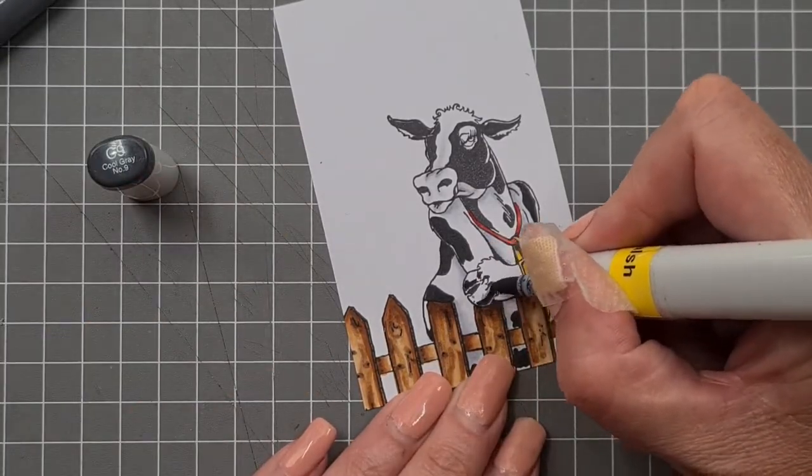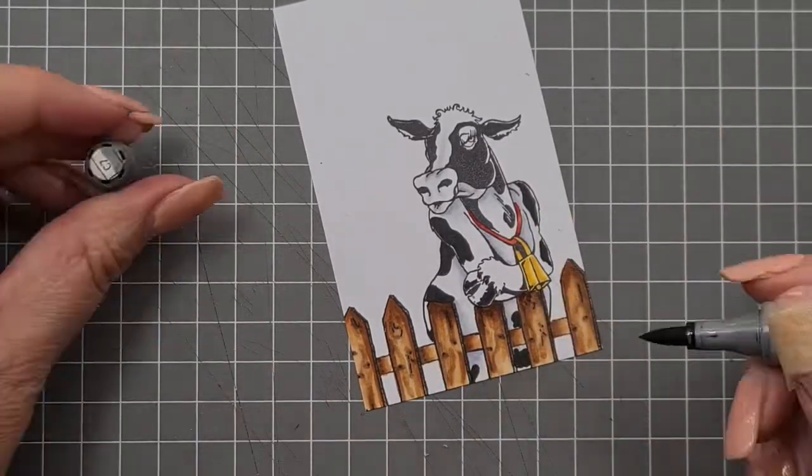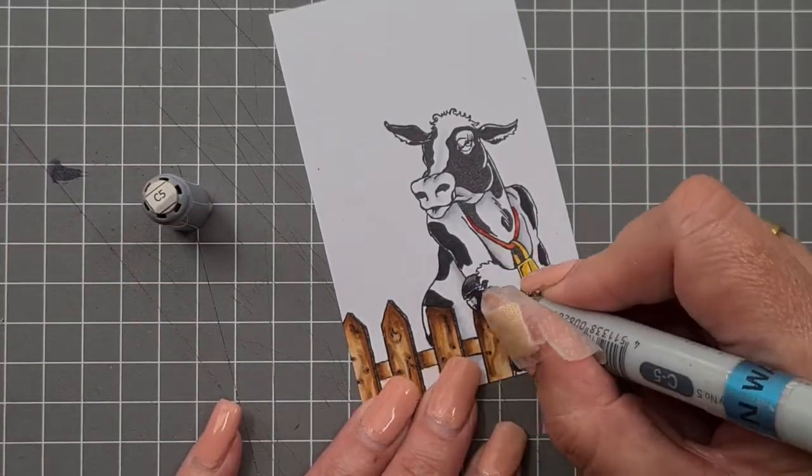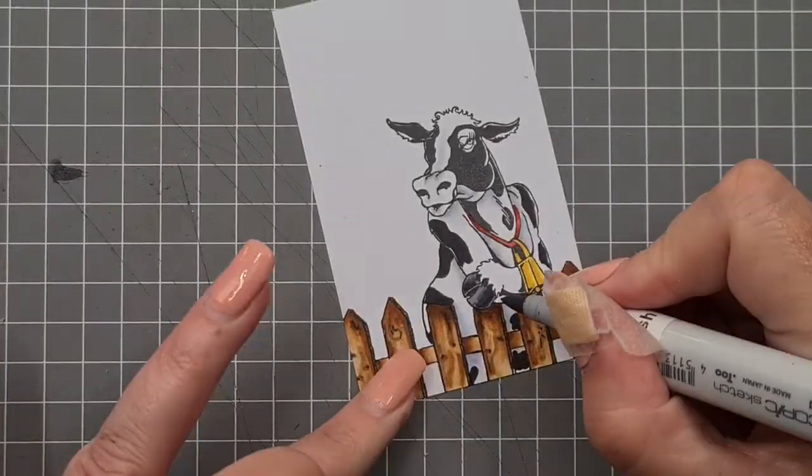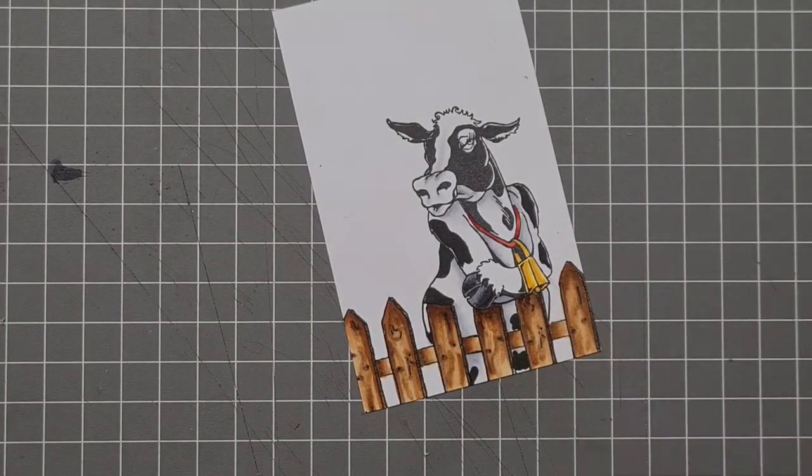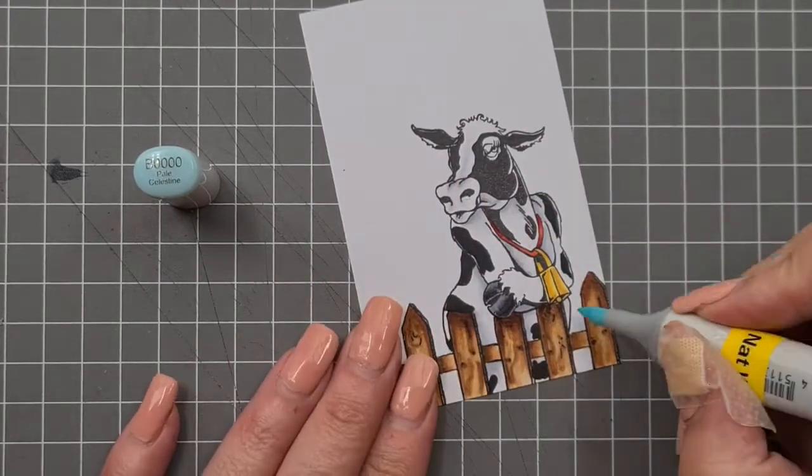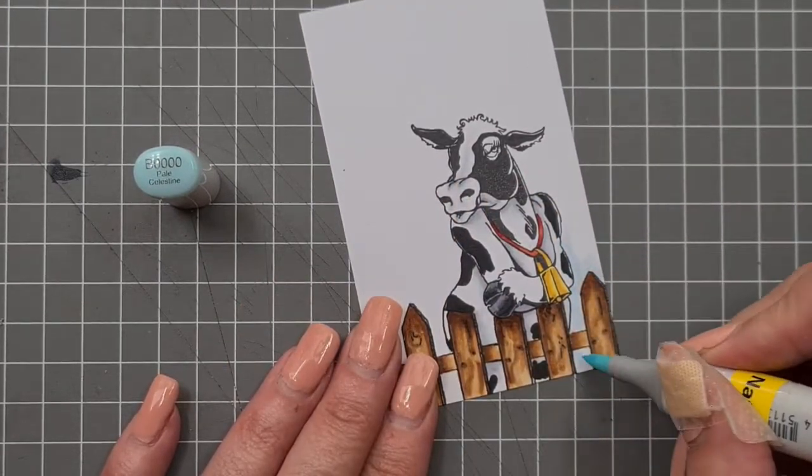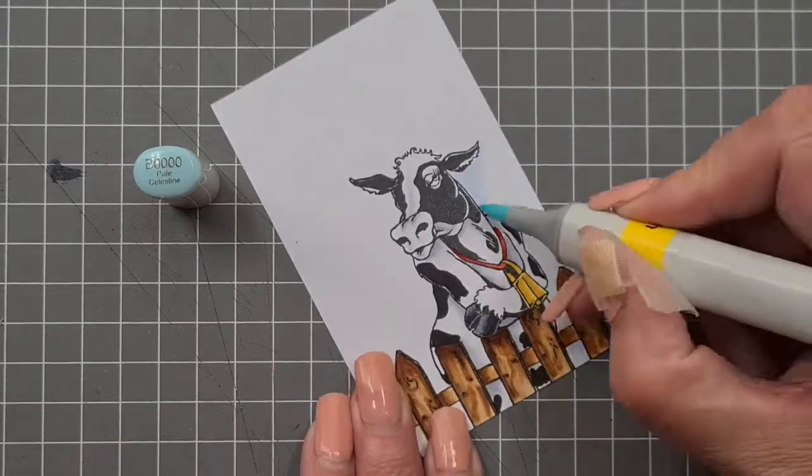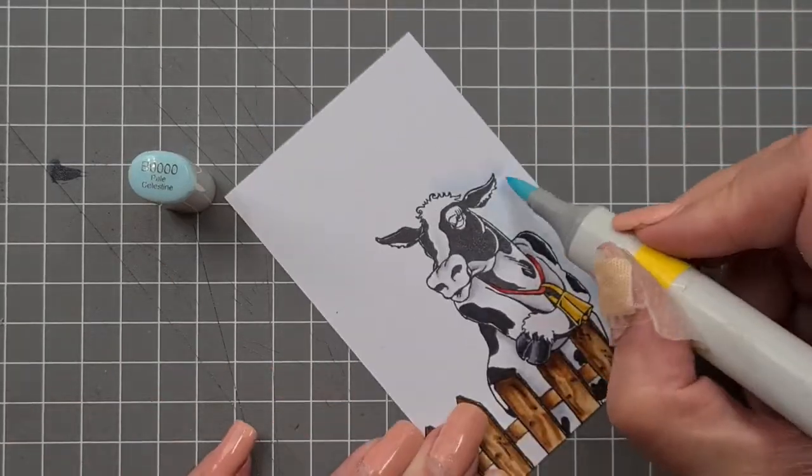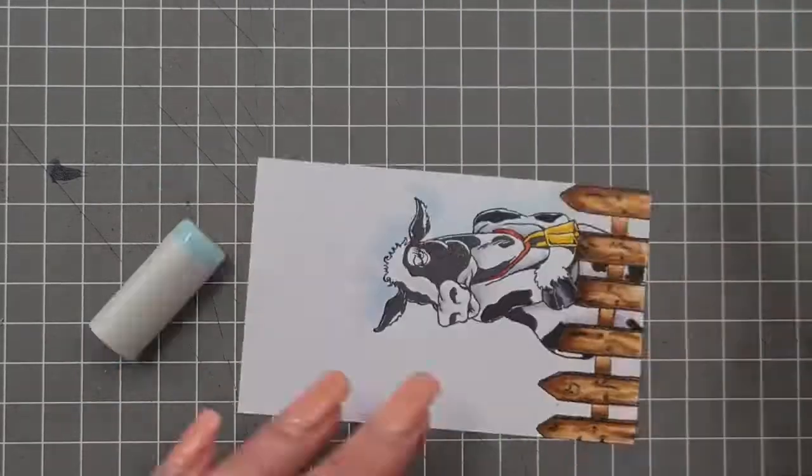We're going back into our hoof with the same colors that we're going to do the spots on. So that's our C9, C7, and C5. Our bell, just get rid of some of that, was YR23, Y17, and Y13. And we're going to do some B0000s for just a hint of a sky.